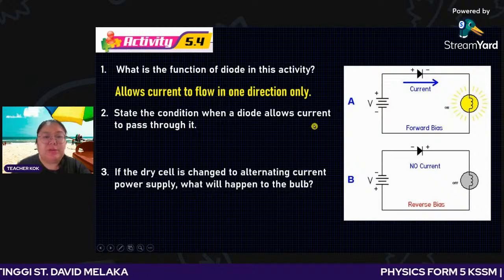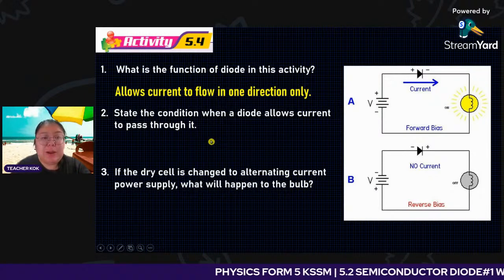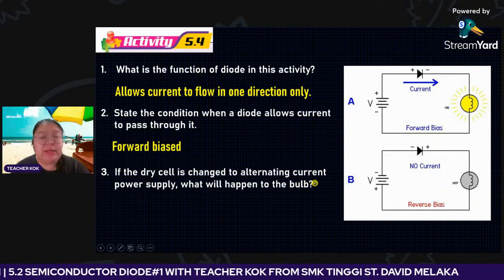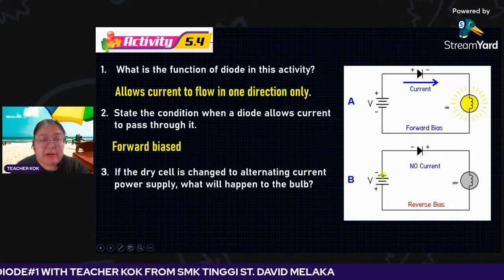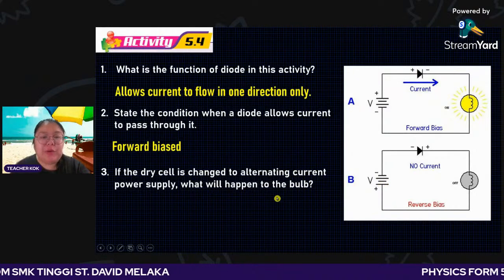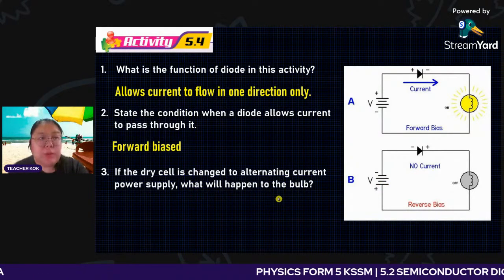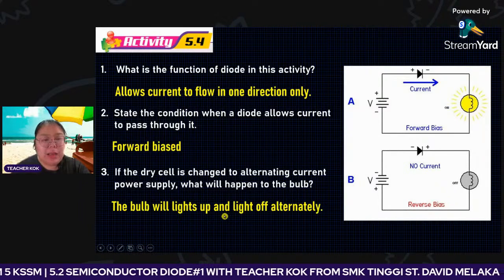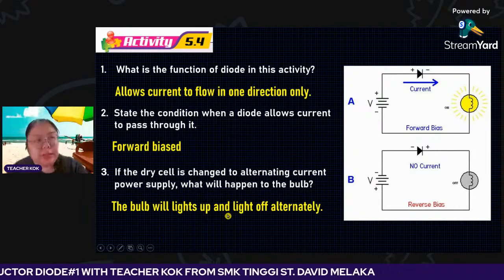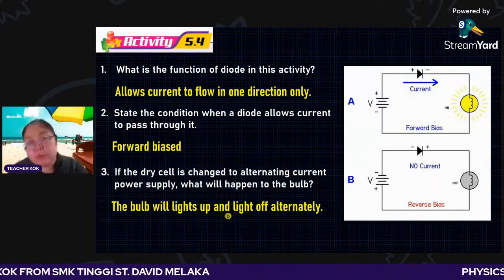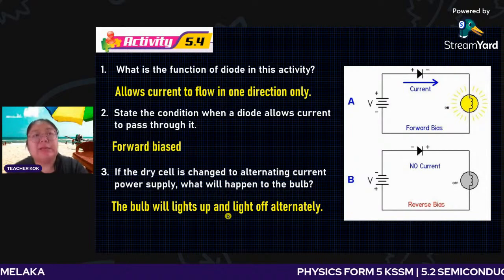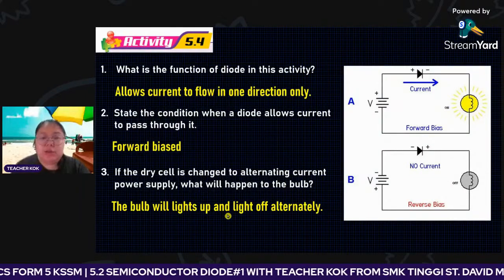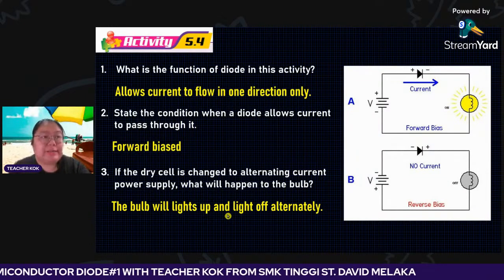The condition when the diode allows current to pass through is called forward bias — the bulb can light up. If the dry cell is changed to alternating current, the bulb will light up and off alternately, because the semiconductor only lets current go one way. When the first connection is correct it lights up; then due to AC alternating up and down, it goes off. This is the function of the semiconductor diodes.